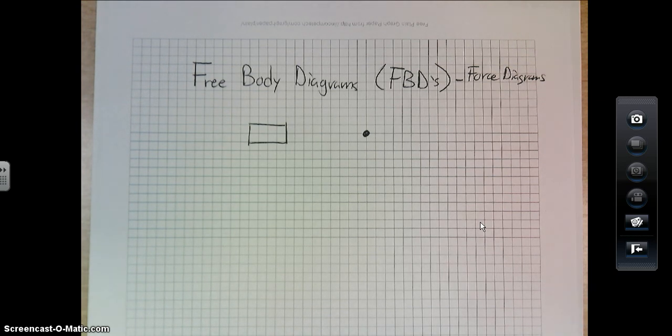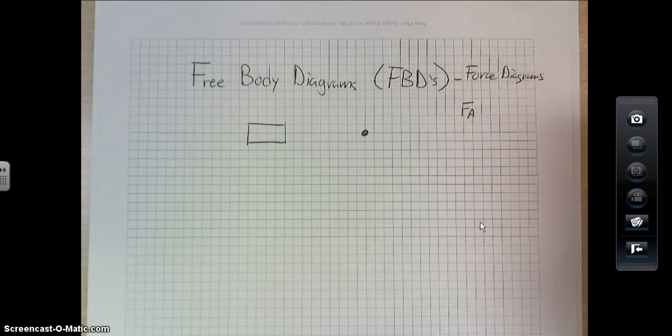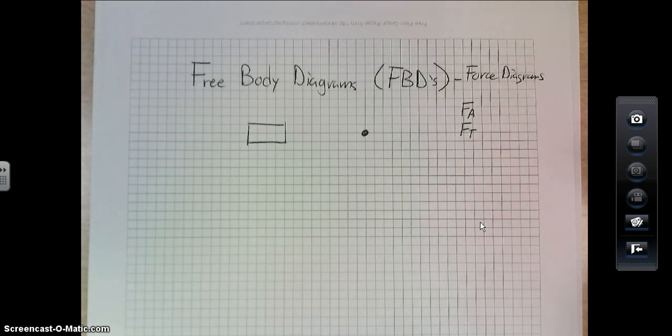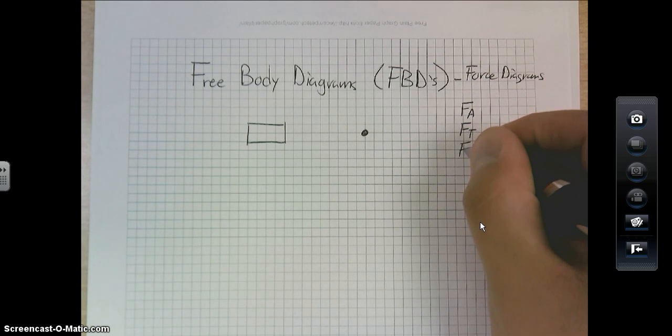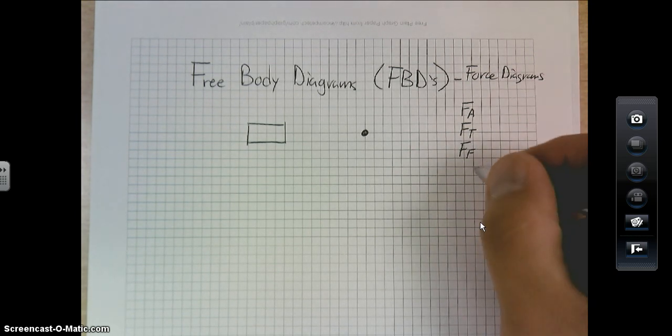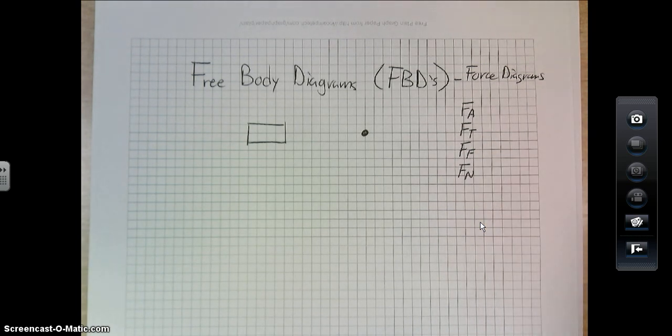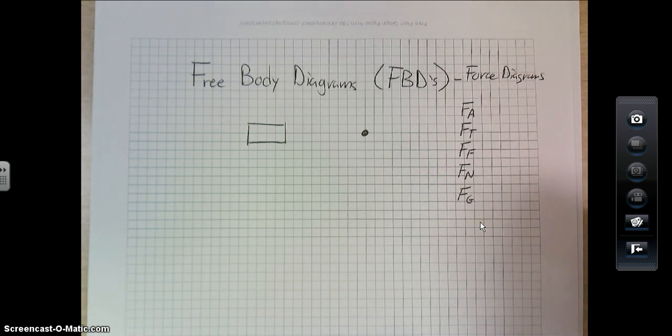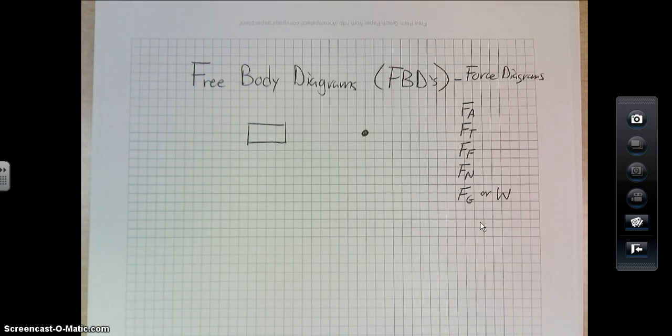Just as a real quick refresher, some of the forces that we've talked about so far: applied forces, which are pushes and pulls; tension forces, which are the result of, say, a cable or something like that, or a rope; friction forces, which oppose motion. Let me see here. I'm missing one other one here. Normal forces, which are always perpendicular to a surface. And then the field force that we've referred to already is F of G, force of gravity, or also known as the weight of an object.